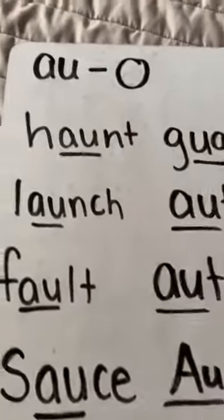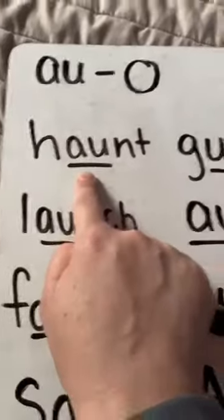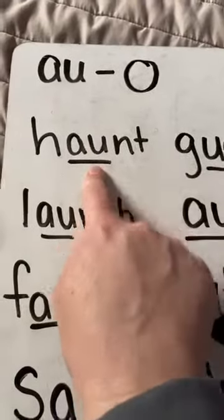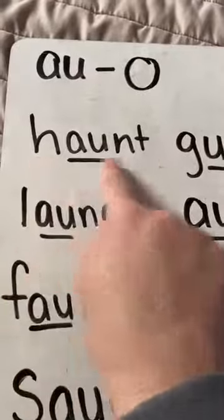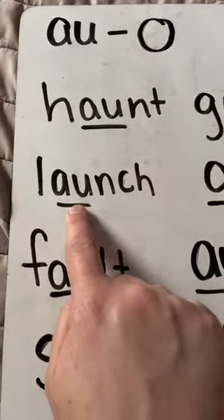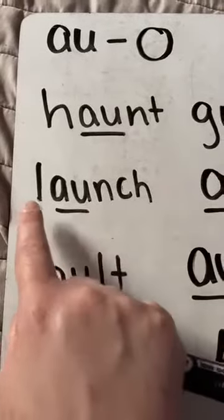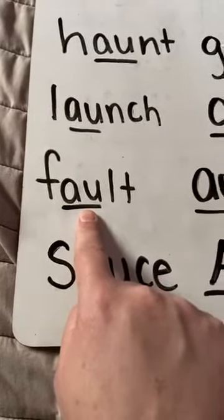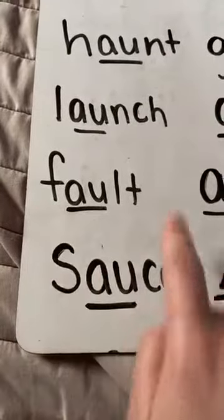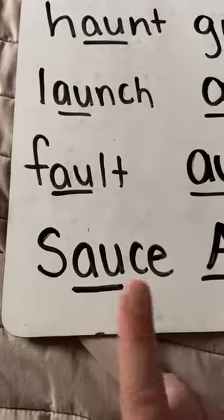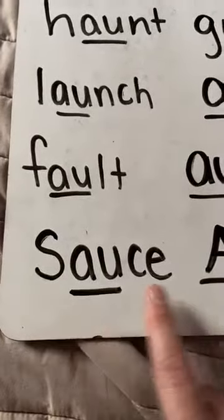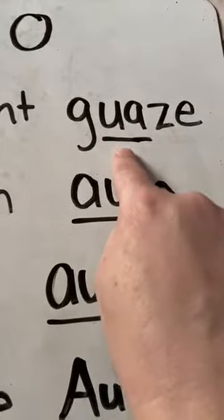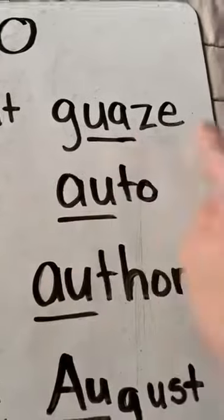I have some words here, and I have them underlined. I want you to say the sound and then say the word — remember that AU says 'ah.' Ready? Sound: ah. Word: haunt. Sound: ah. Word: launch. Sound: ah. Word: fault. Sound: ah. Word: sauce. Sound: ah. Word: gauze.